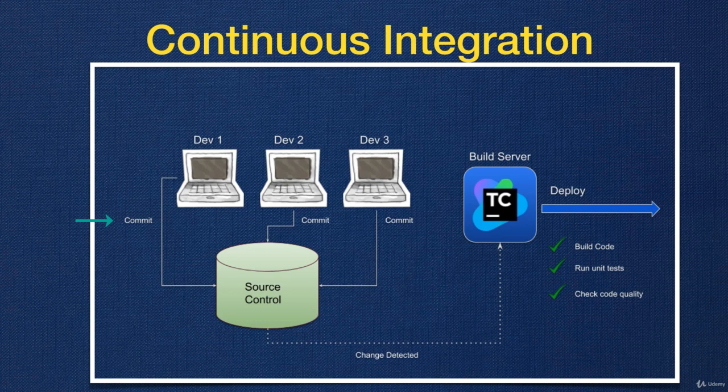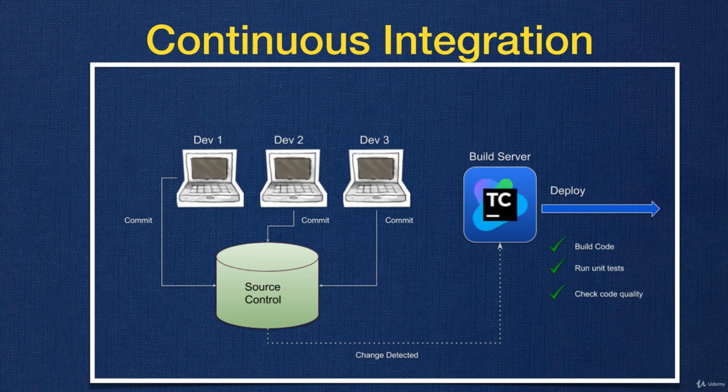The problem is that we want to make sure when a developer makes changes to the code and pushes it back to the source code repository, they are not going to break the code. We also want to make sure that as developers make changes, we can deploy these changes to different environments so they can be tested. In agile methodology, we want to fail fast — we want to know if there is a problem fairly quickly.